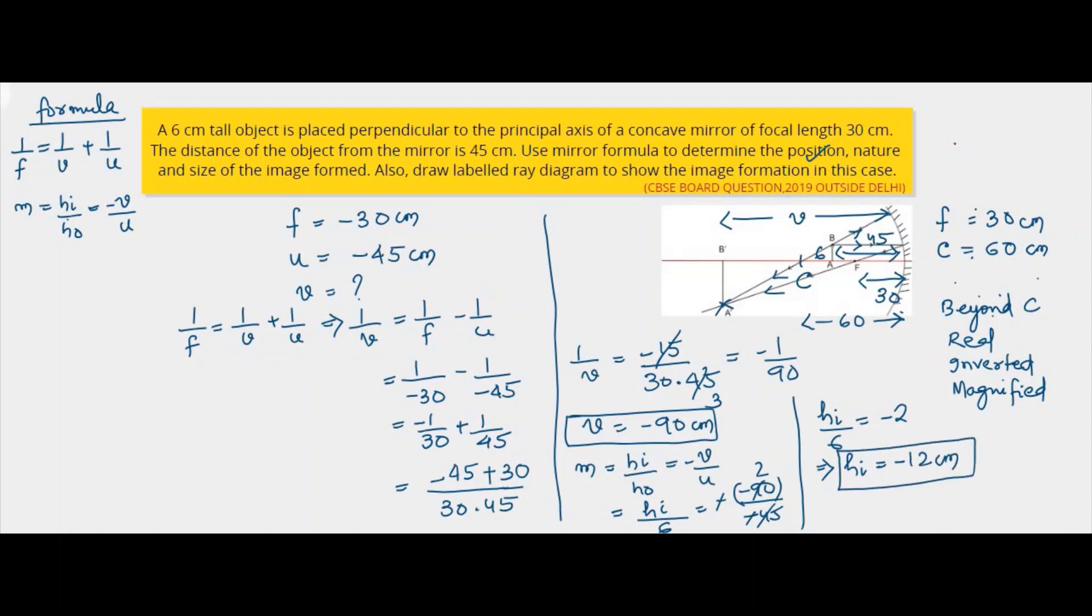So from these two answers, we see that the image is formed at a distance of 90 centimeter from the pole. So as per the condition, it should form beyond C. That means it should form at a distance more than 60 centimeter. So here we got 90 centimeter. So our condition is satisfied.